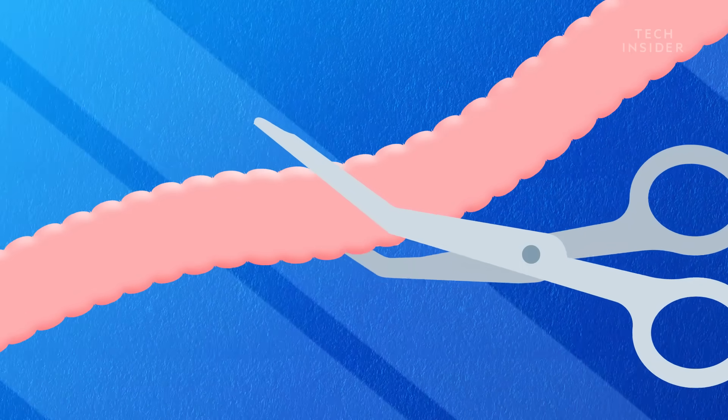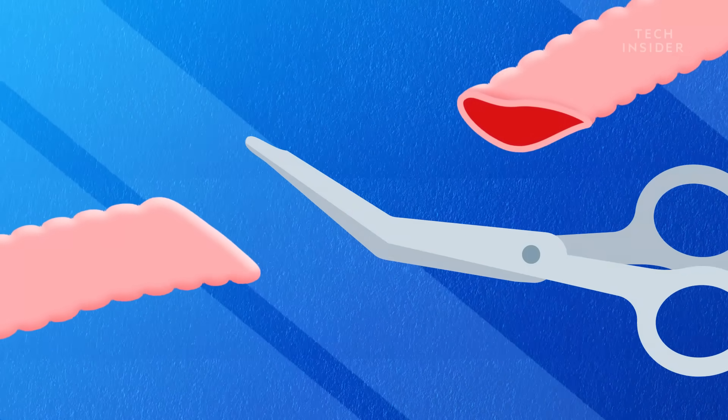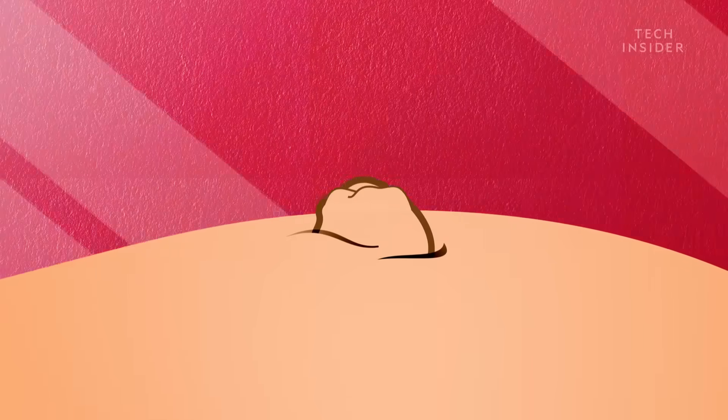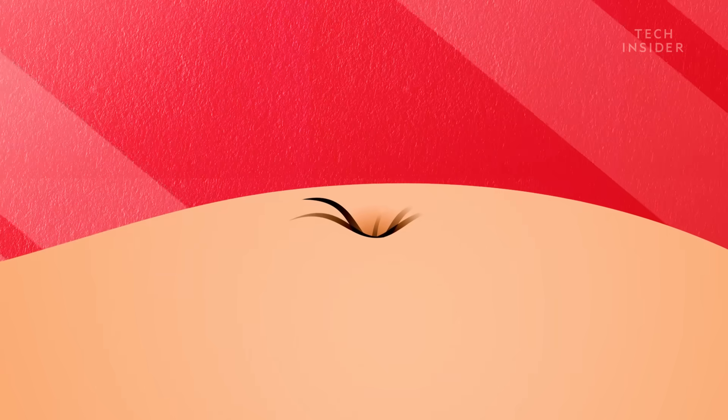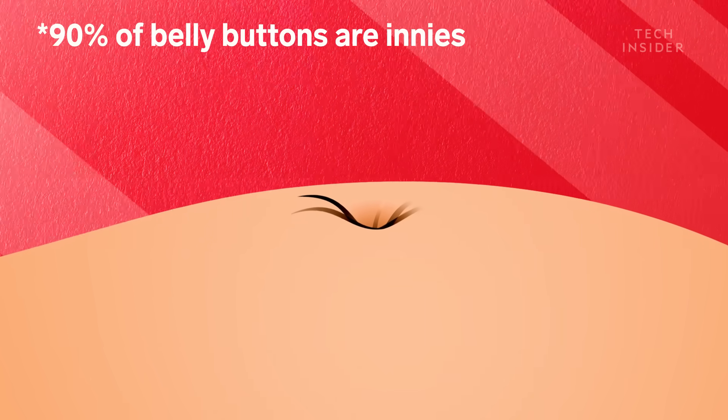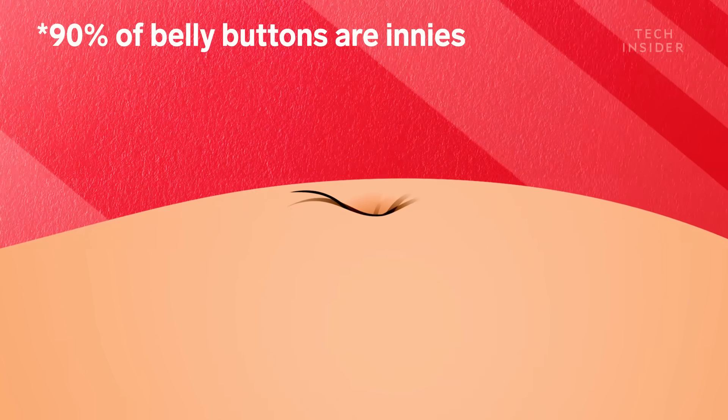Your belly button is a scar, your very first one. It forms when a doctor snips your umbilical cord. And depending on how it heals, you could have an outie or, more likely, an innie. And innies are ripe for colonization.